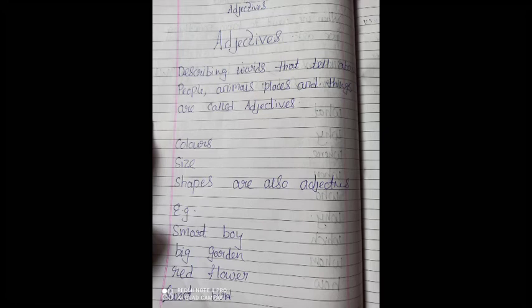Okay, so let's see some example. Smart boy. What kind of boy he is? He is a smart boy. So, here smart is describing the boy.